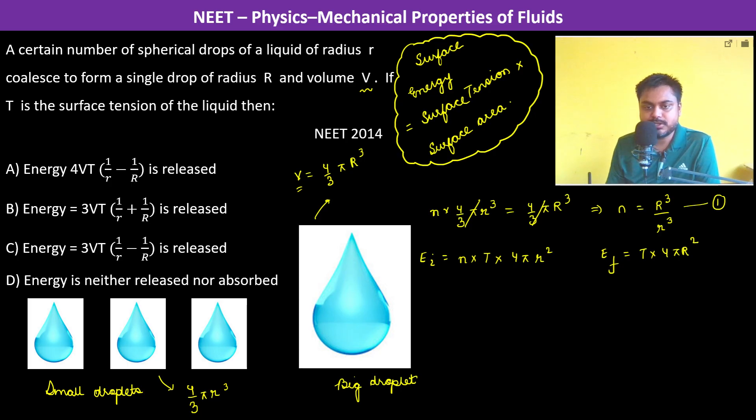So the difference, that is the delta E energy, is going to be N T 4 pi r square minus T into 4 pi capital R square. Now what is N?